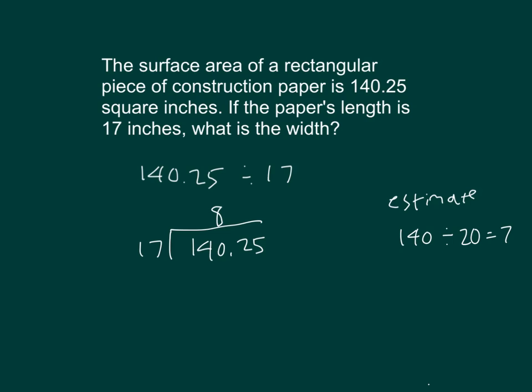8 times 7 is 56. 6 regroup of 5. 8 times 1 is 8, plus 5 is 13. So, that's 136. Subtract that, we get 4. Bring down the 2.